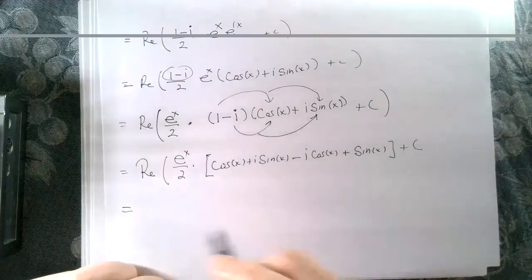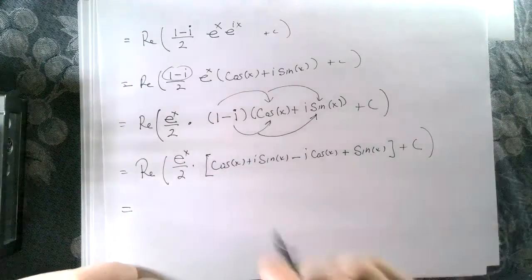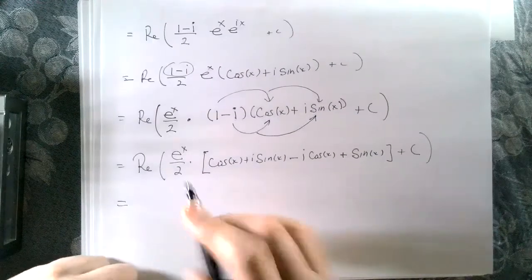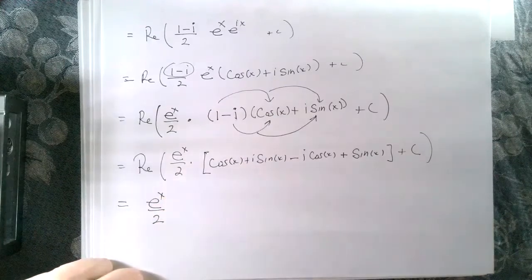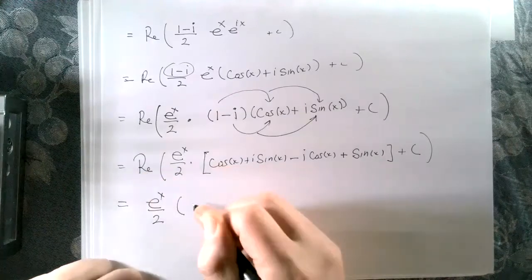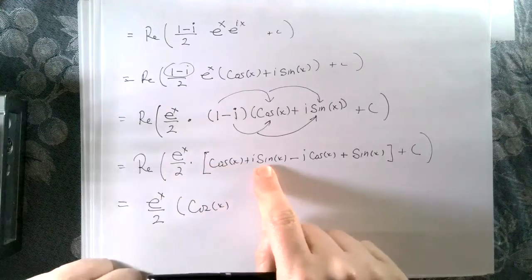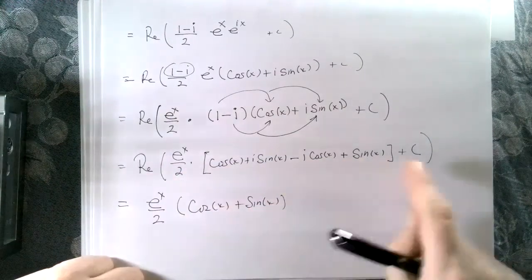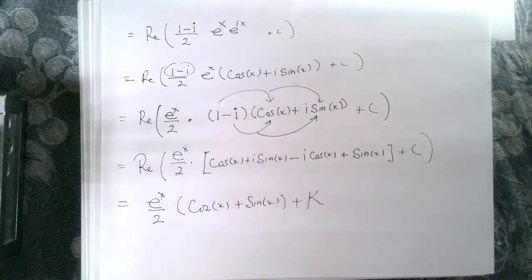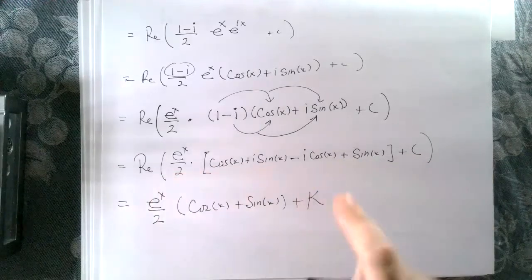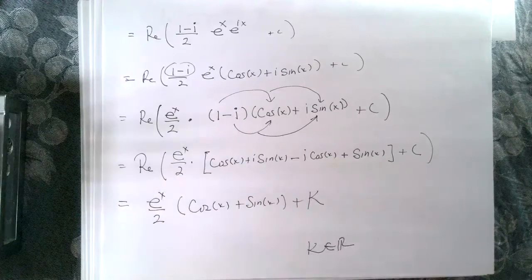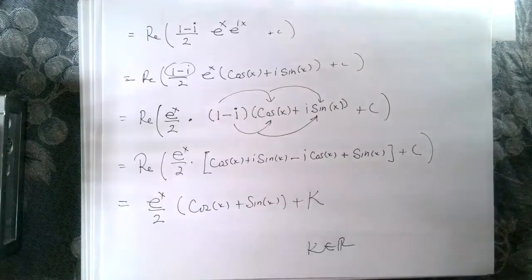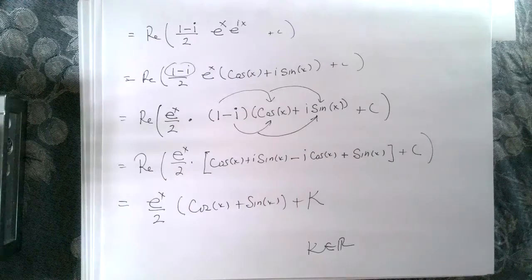Now we take the real part. The real part gives us e to the x over two times cosine of x plus sine of x, plus some real constant K. Really cool application of Euler's formula — it turned the integration by parts problem, where you had to solve for the integral algebraically, into a basic u-substitution. Very nice.